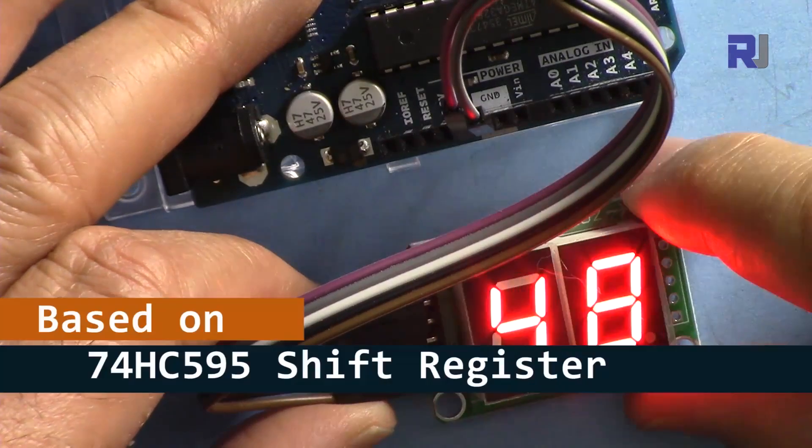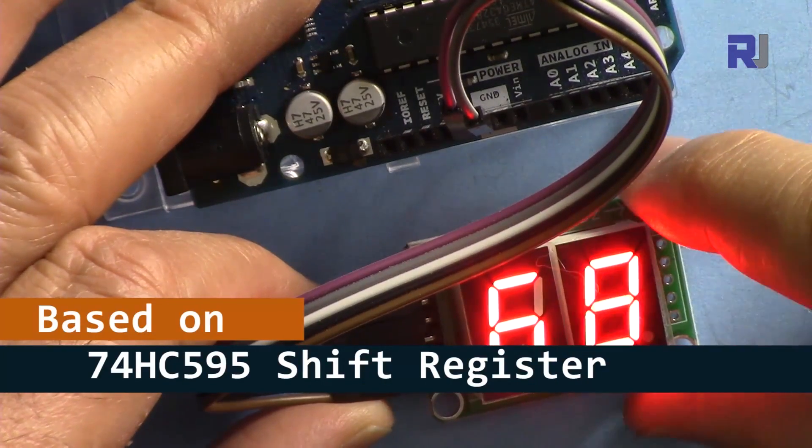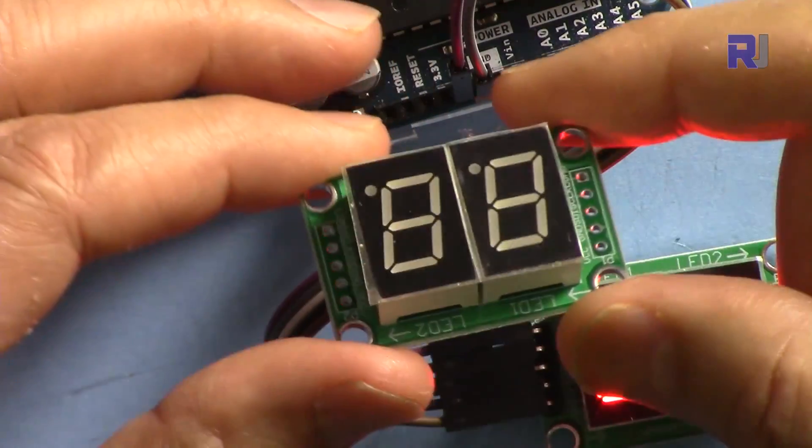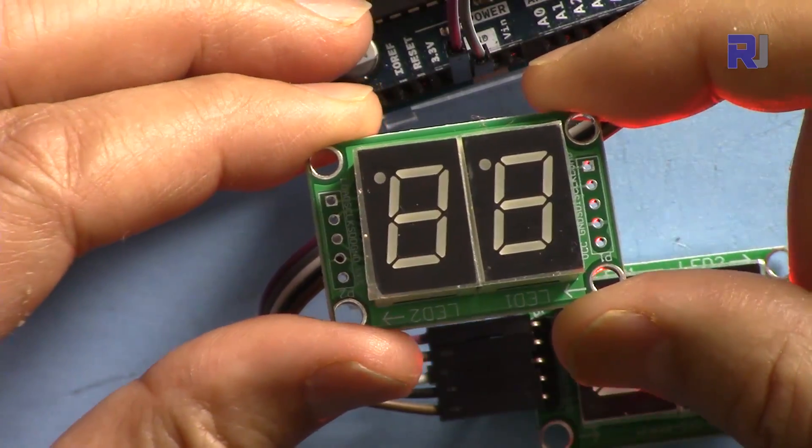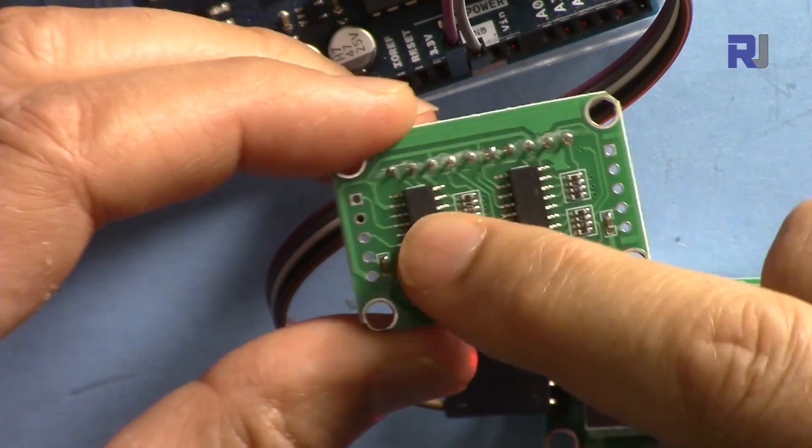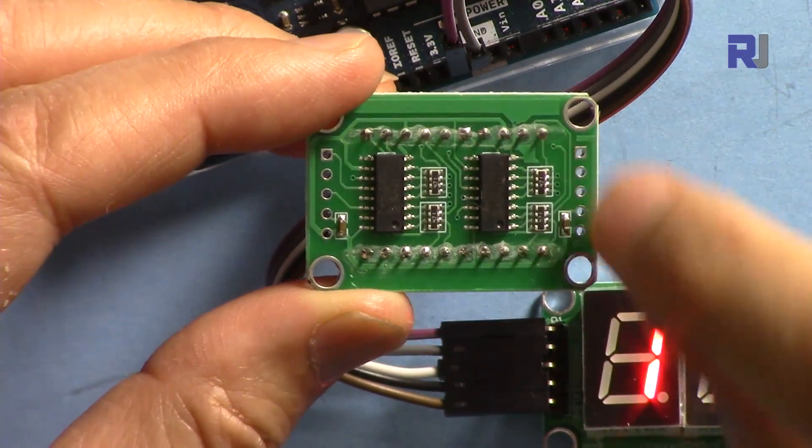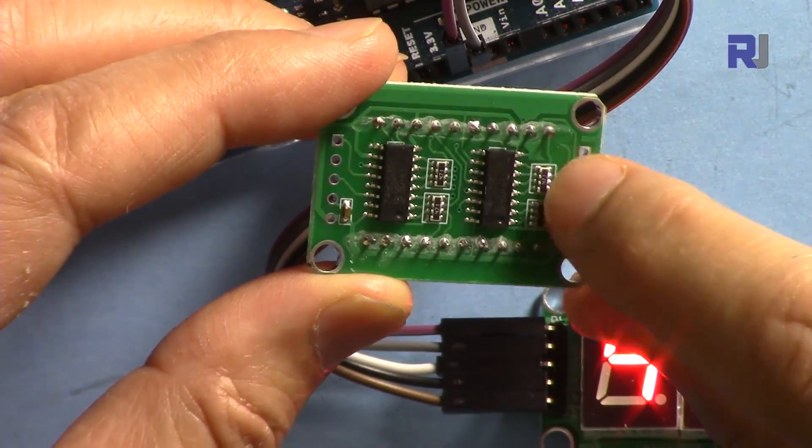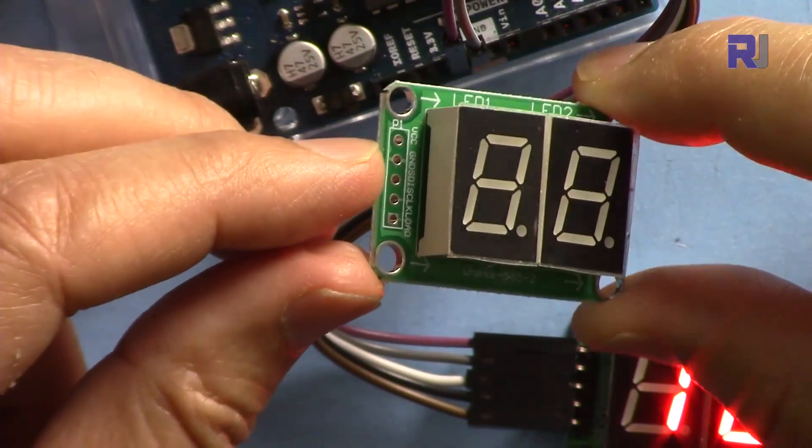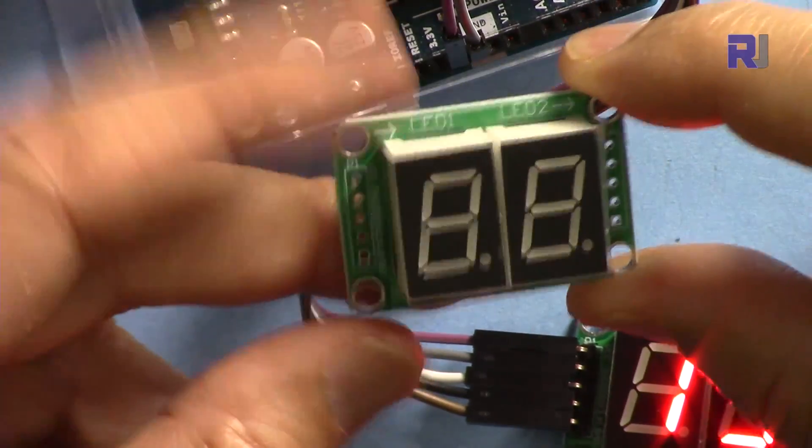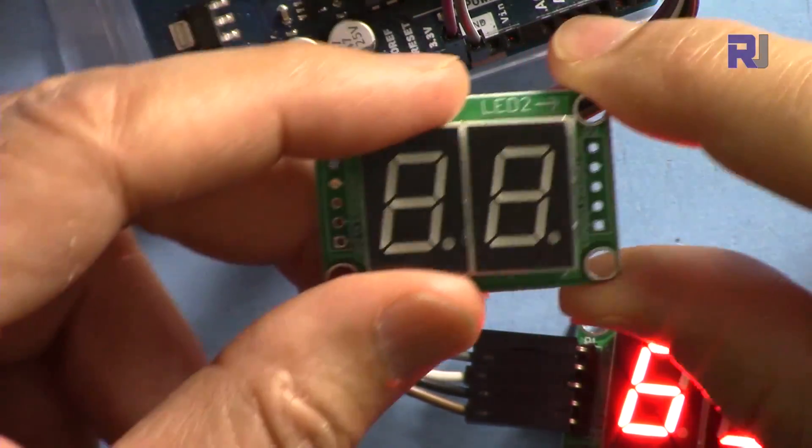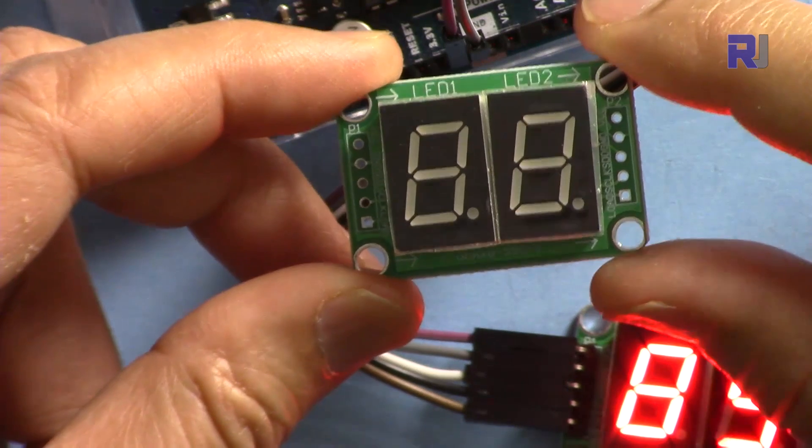This is based on the 74HC595 shift register and two digits have been arranged in the module. When you buy it there will be no pins attached to it. There are two surface mount devices. All the LEDs have been arranged with the bias and resistor so you don't have to worry about the resistor. All the pins are labeled here and as you can see you can cascade it also. For now, these two will be enough because we have four digits.